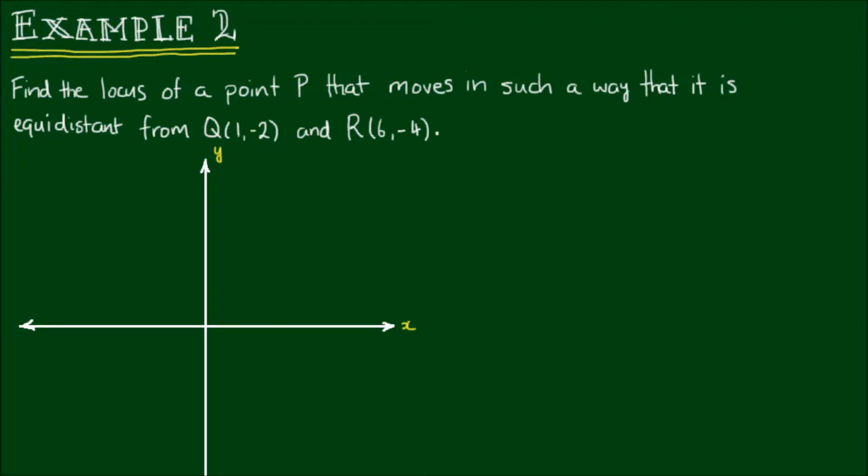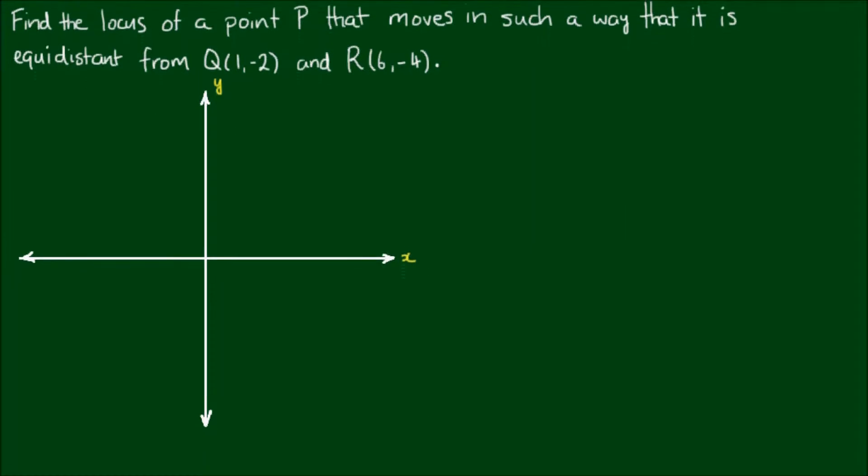Alright, for example 2, find the locus of a point P that moves in such a way that it is equidistant from the point Q at (1,2) and the point R at (6,4). So again, the first thing to do is to plot the points Q and R. We have the point Q at (1,2) and R at (6,4). And we have to find a point P with the coordinates (x,y). And the distance from P to Q and the distance from P to R must be equal to each other, because that's what the word equidistant means.